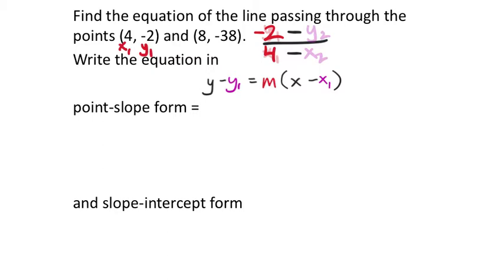The second ordered pair is x2, y2. The y value is negative 38, and the x value is positive 8. Using the calculator — n over d — I have negative 2 minus negative 38 in the numerator, 4 minus 8 in the denominator. The result is negative 9. So my slope here is negative 9, and that's the m in point-slope form.